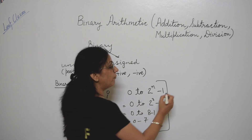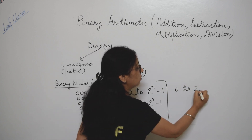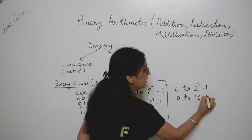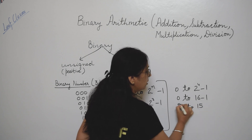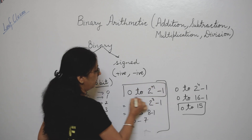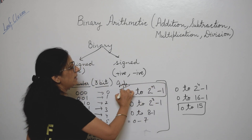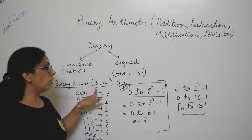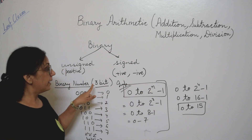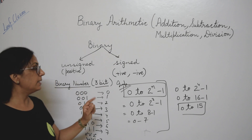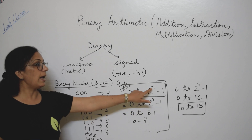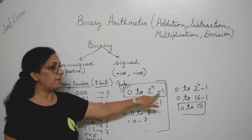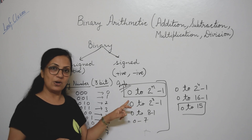Similarly, if you have a 4-bit number, it can be represented by 0 to 2 to the power 4 minus 1. That is 16 minus 1, so 0 to 15. Children, always remember this formula — it is very important. It tells us how many representations are possible according to the number of bits for binary numbers. This formula is for unsigned numbers. Unsigned numbers always start from 0, and the upper limit is 2 to the power n minus 1, where n is the number of bits.